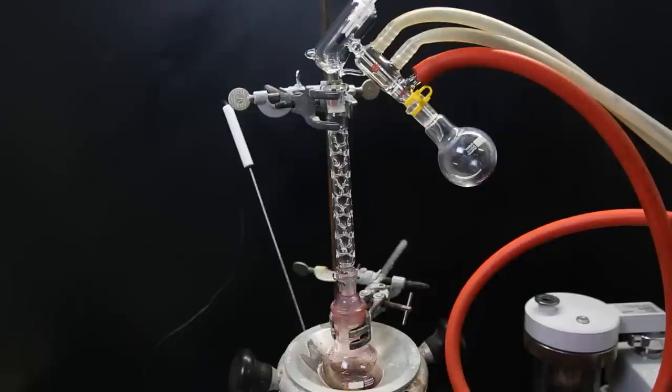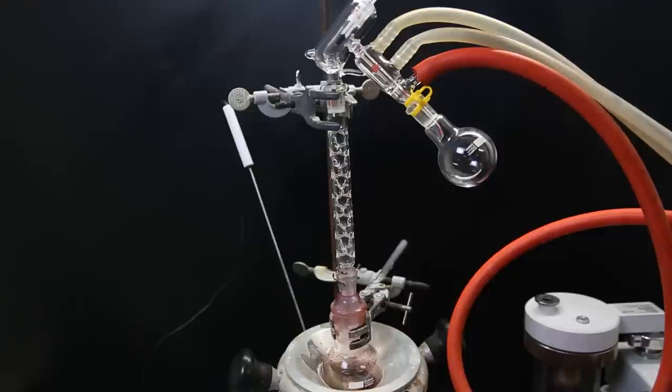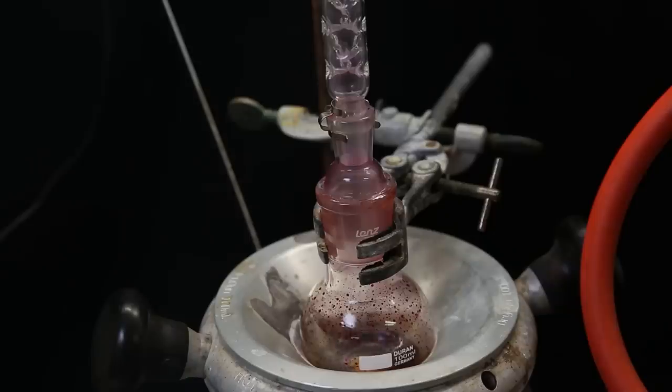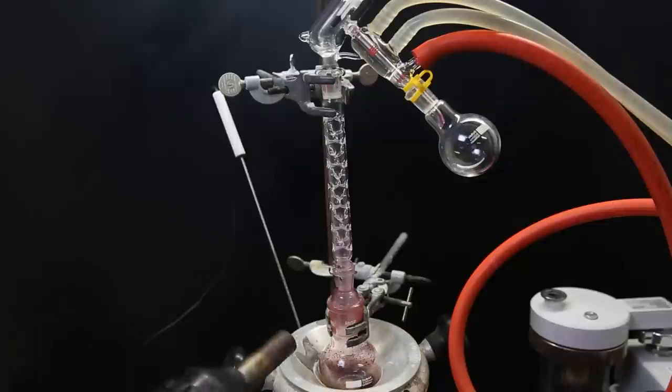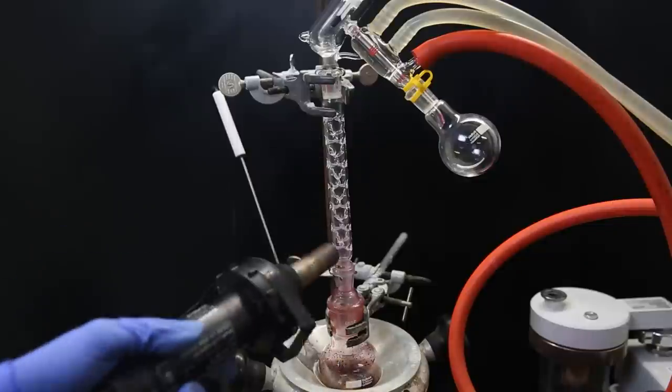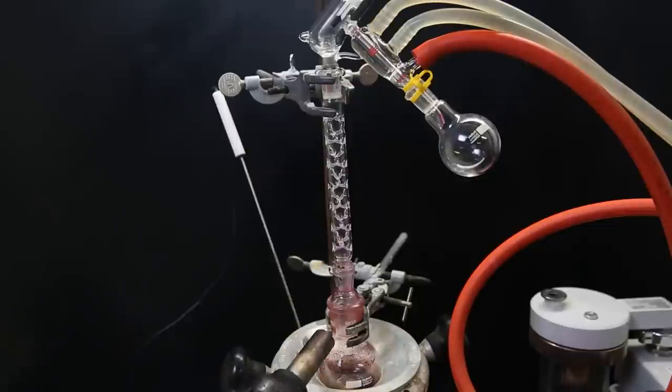I replace it with a small fractionating column, with a small short path distillation apparatus on top. In between the pump and the apparatus is a trap, and I pull a strong vacuum on the setup. I increase the heating strongly, and start assisting the distillation with a heat gun. At this low pressure and high temperature, I can simply distill over the thiobenzoyl chloride.